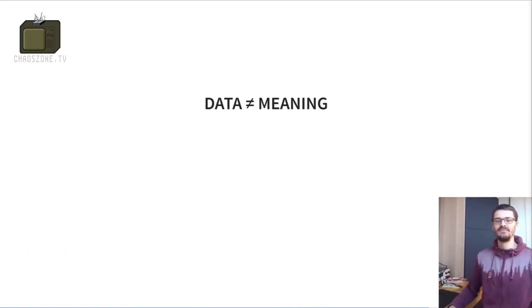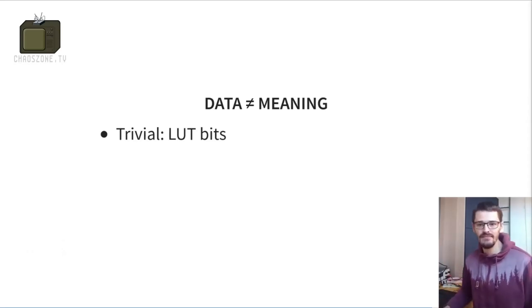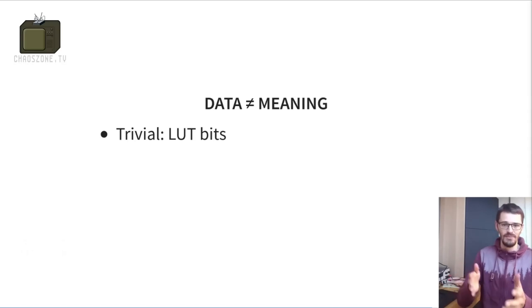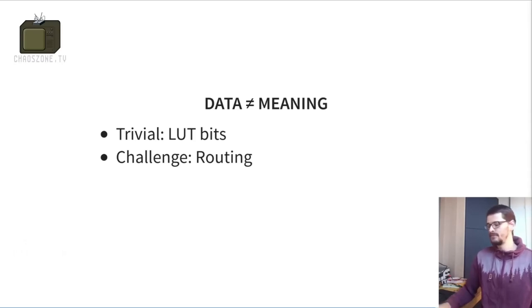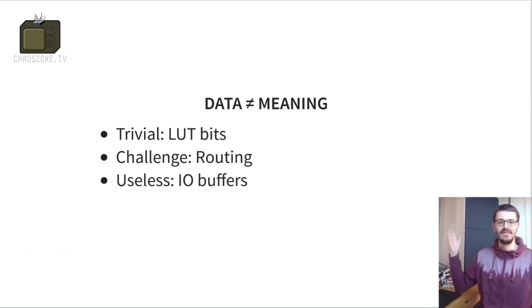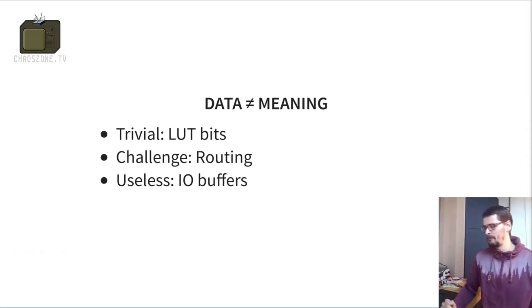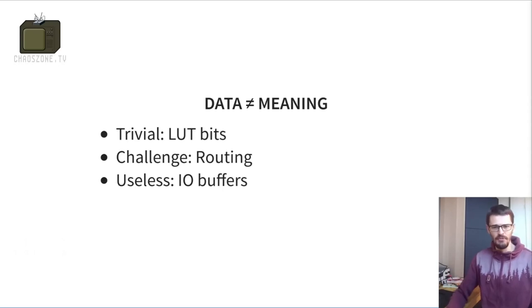Data is not equal to meaning — you have a bunch of binary numbers and you don't know what's going on. They also used interesting encoding techniques where data was encoded as decimal digits of a binary number. You can look at the data and have some names from the exported symbols. The simple ones like the LUT bits are straightforward, but routing was the key challenge. In the end I managed to figure out and extract the routing information from the FSE file. For IO buffers, they are very complex in FPGAs with different voltage levels, modes, and everything — and they're also different per FPGA variant — so I went back to fuzzing.